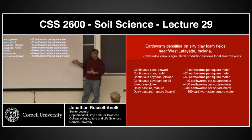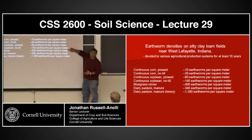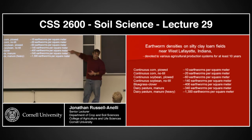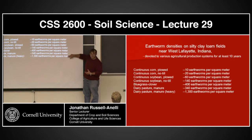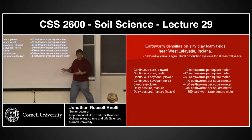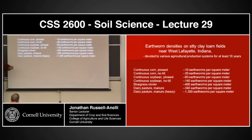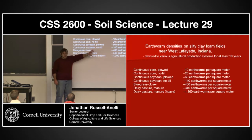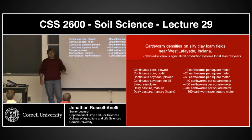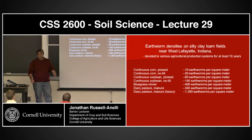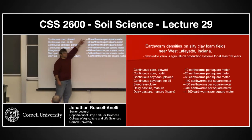Even in no-till systems, earthworms in the bluegrass-clover mix are higher than in corn systems. There's a lot going on that affects their distribution — feedstock, disturbance, type of feedstock, and amount of feedstock. With that kind of variation in population, where are we going to have more casts? We're basically looking at a trend from least casts to most casts — straightforward.